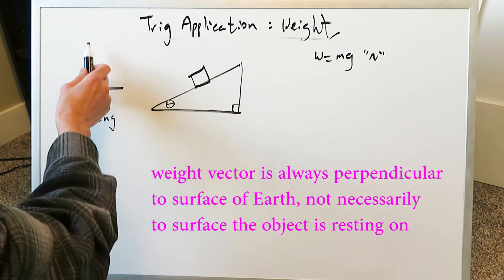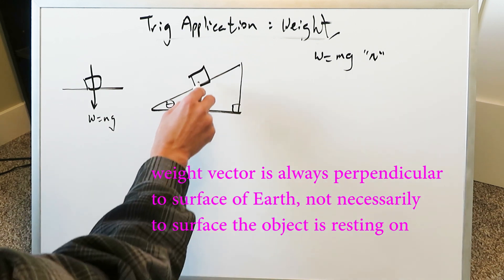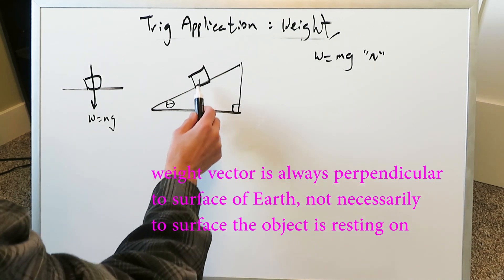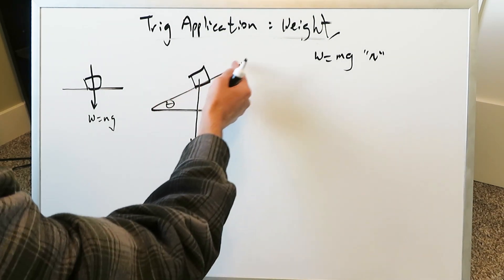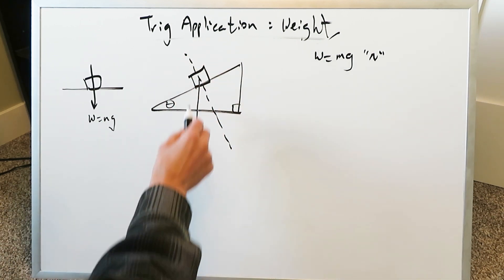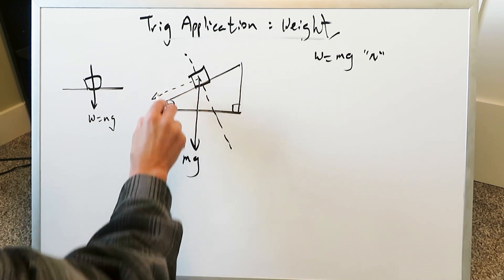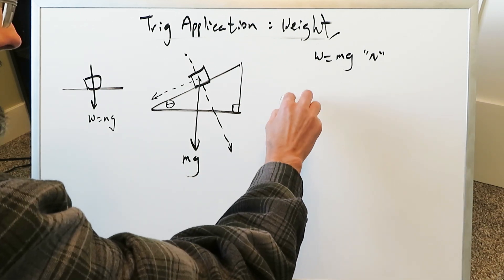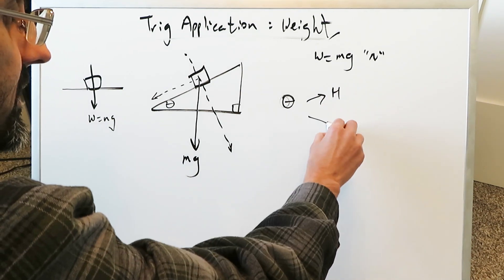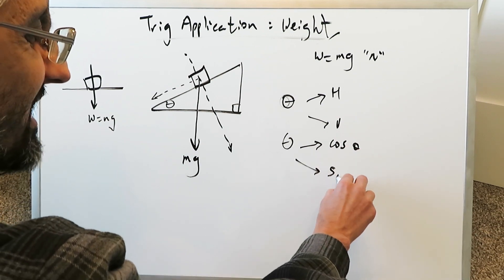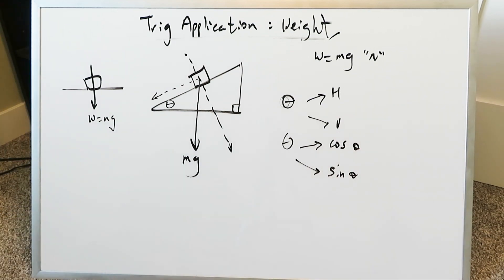When you put an incline, the vectors will change. The component going directly down is your weight equal to mg. But when you add an angle, you generate two components: a horizontal component and a vertical component — you can also think of them as a cosine component and a sine component. The hardest part for many students is understanding which component relates to which line.